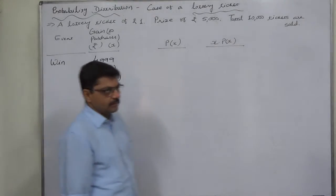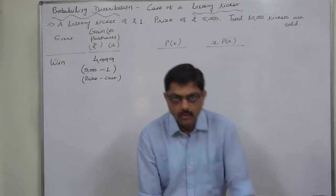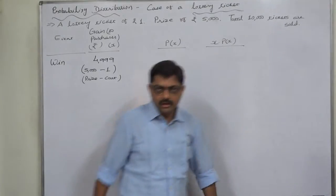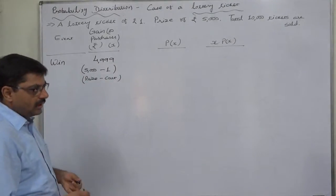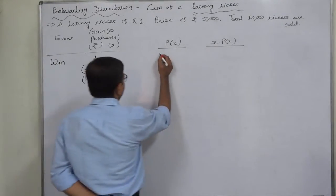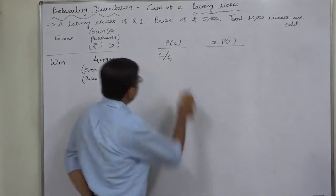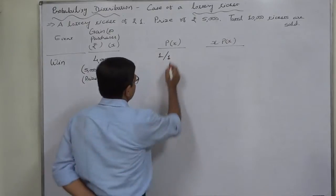What is the probability of this kind of event? Only one against 10,000, because total 10,000 tickets have been sold and on only one ticket the prize money will be given. So the probability is one by, or one against, 10,000.